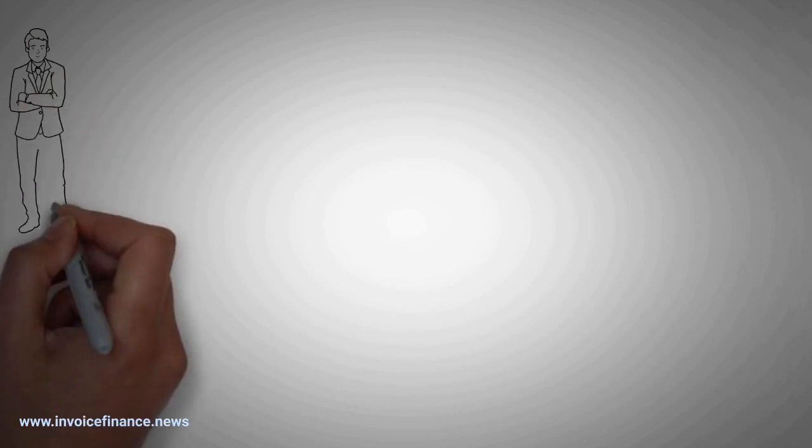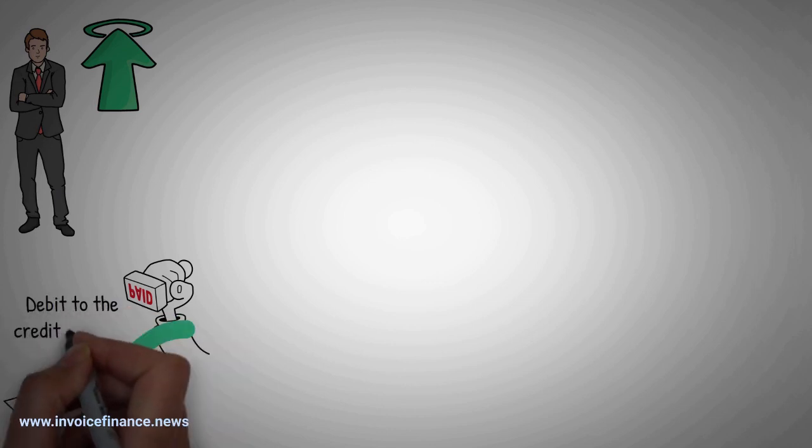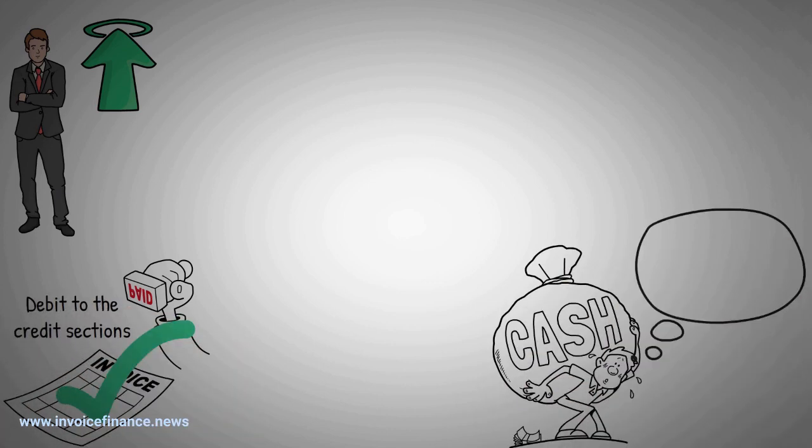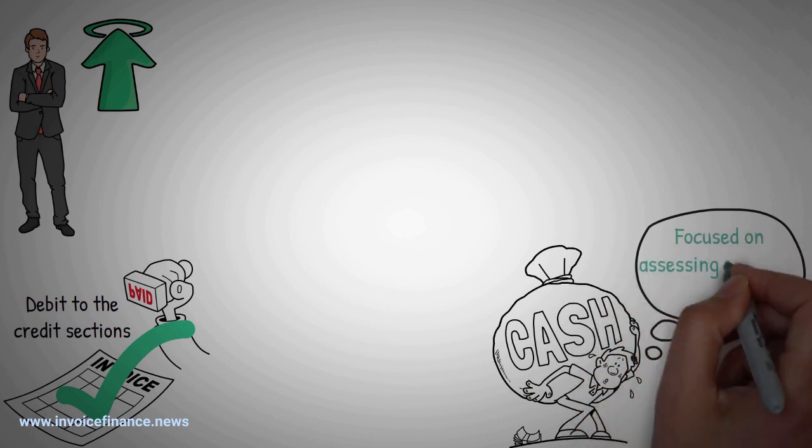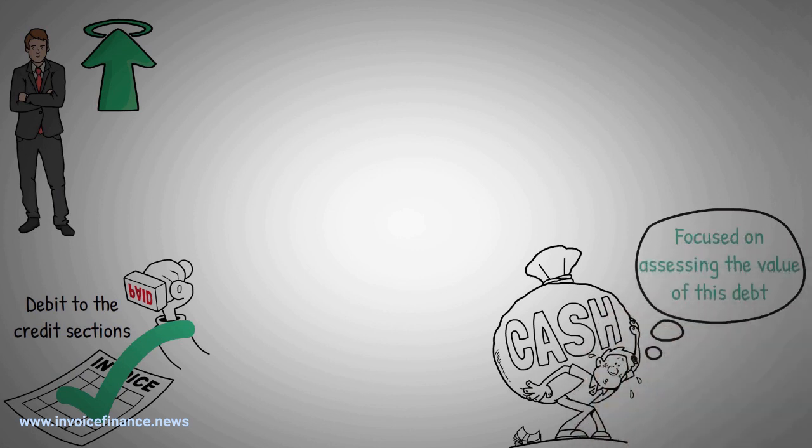The process all starts with the company's sales ledger. This will be constantly updated as invoices are paid and sales are moved from the debit to the credit sections. An invoice financier buys debt from a company, so he or she is very much focused on assessing the value of this debt.